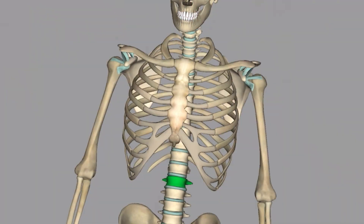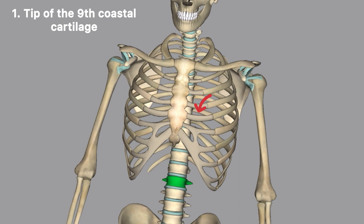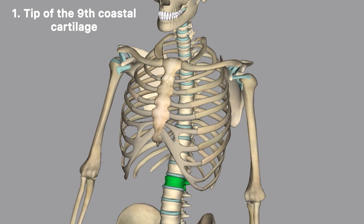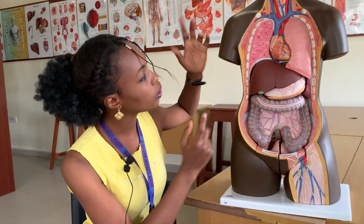The first thing you should note about the L1 vertebra is that's where you find the ninth costal cartilage. Let's count — one, two, three, four, five, six, seven, eight, nine. So you see the ninth costal cartilage at the L1 vertebra. I want you to always visualize rather than cram with mnemonics — use the anatomical landmark.